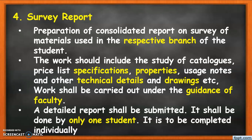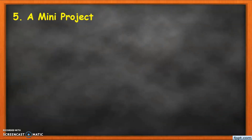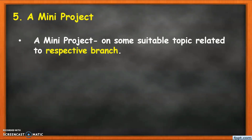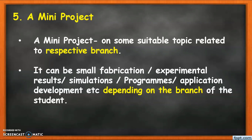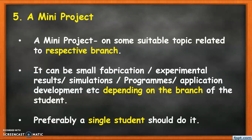Only a single student is allowed under the survey report option. The fifth option is a mini project on a suitable topic related to the respective branch. Students need to take a topic from their branch and carry out the mini project — it can be a small fabrication, experimental result, simulation, programming, application development, etc., depending on the specific branch. Preferably a single student should do it. In any of the options, students must work individually — no group work is allowed.